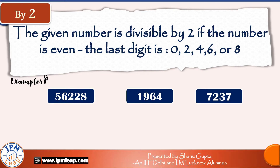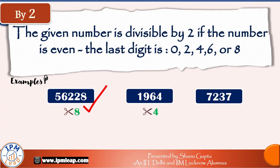We know that all numbers are divisible by 1, so the first divisibility rule is for the number 2. A number is divisible by 2 if it is even — that is, if the last digit is 0, 2, 4, 6, or 8. For example: a number ending in 8 is divisible by 2; 1964 ends in 4, so it's also divisible; but 7237 ends in 7, which is odd, so it is not divisible by 2.